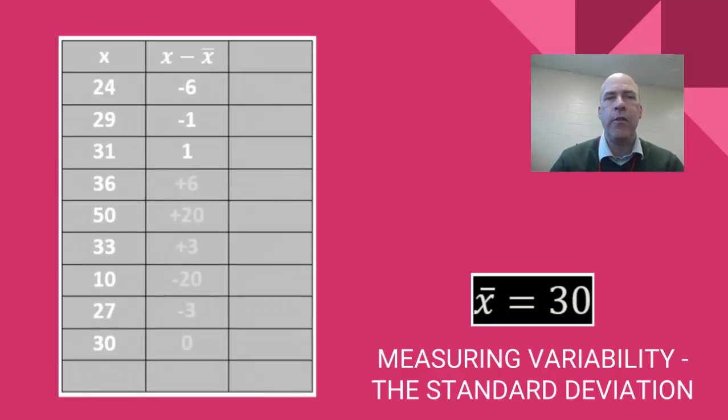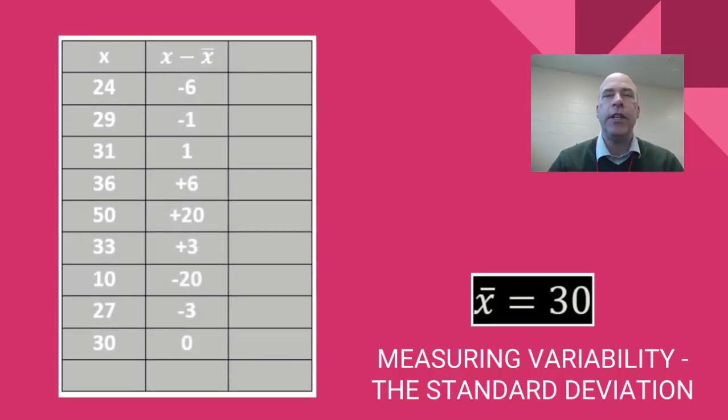So you can fill this table in on your own and we end up with all these numbers and they're called deviations. They individually tell us how much above or below each data point is above or below the mean.